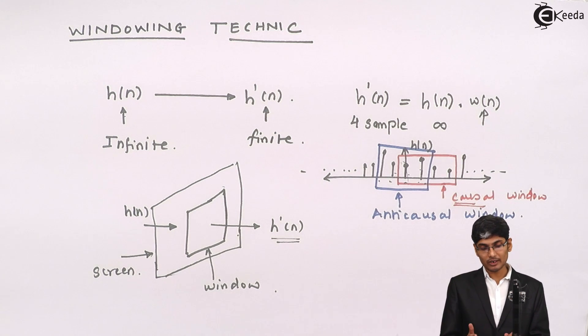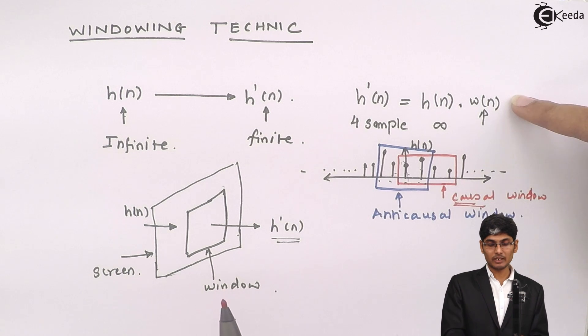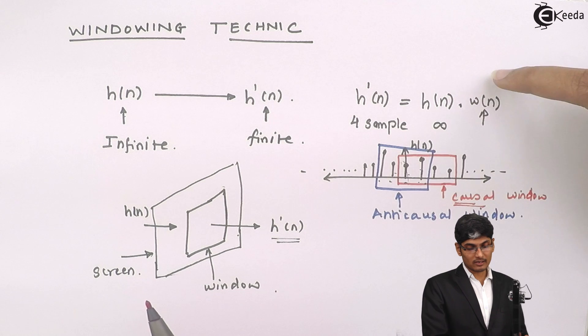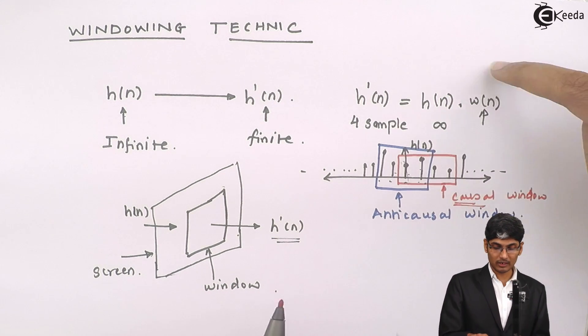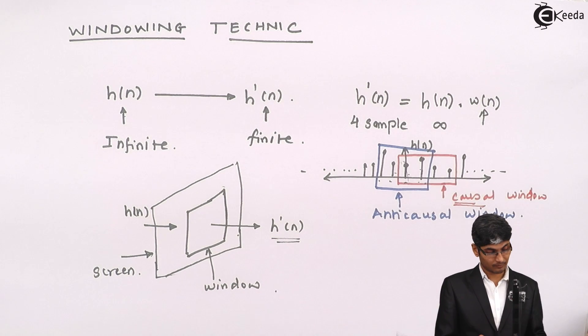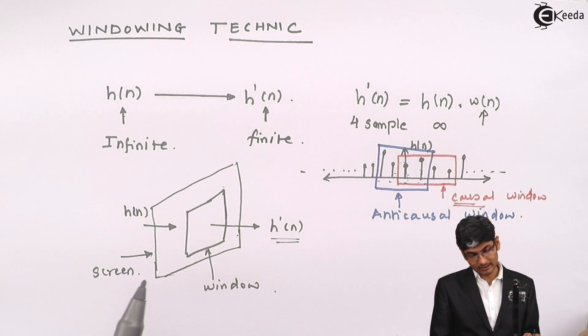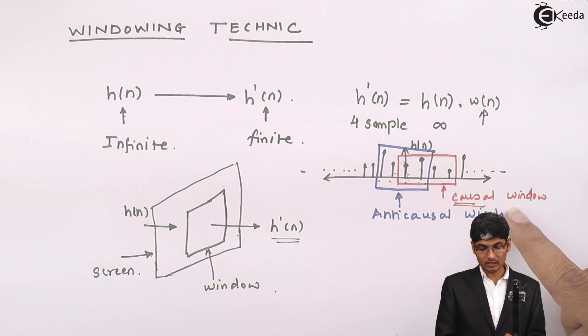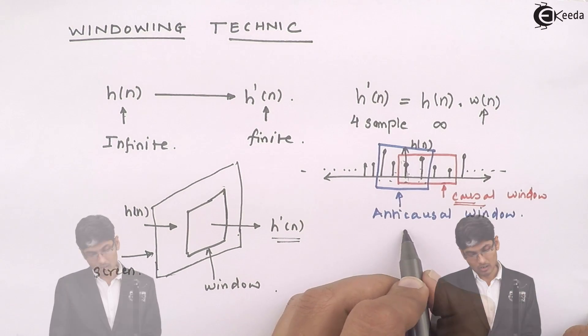What are we going to do? We are going to multiply a function called w n to h of n and picking up 4 samples. What is this function will look like and how we will get only 4 samples out of this? I will select such that, this is infinite length signal, I want only 4. Let's take the example of causal window.